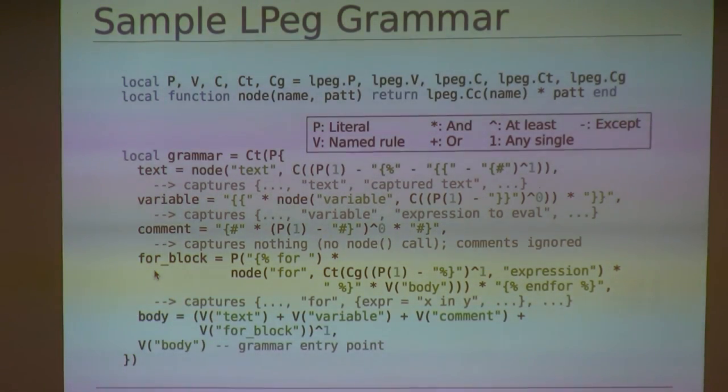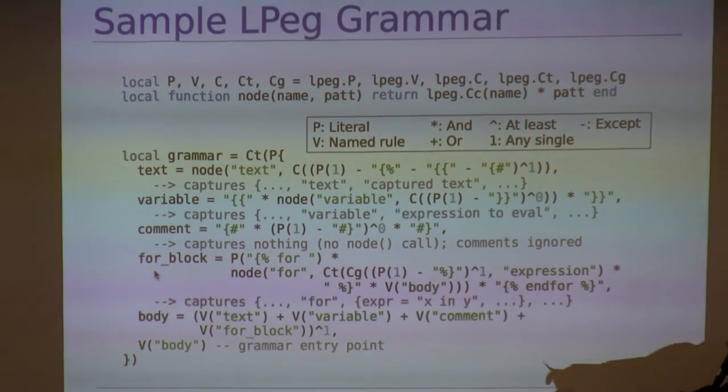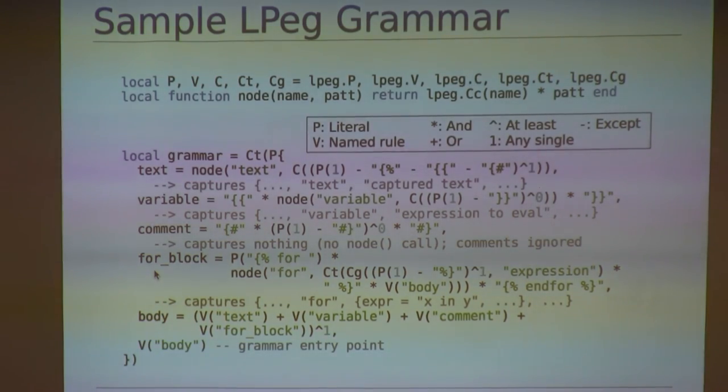Now, the for-control structure, that's complicated. Essentially, we're just going to match the beginning for delimiter. We're going to capture the for expression, then we're going to match something called body, followed by the end for delimiter. Now, what is body? Well, you can see the next rule that body is composed of one or more text, variable, comment, or for-block rules. So now you'll note that we can nest for blocks within one another. And the last line there just tells LPEG to start in the body rule. So, after breaking down this grammar, we can see it's not that complicated, and it will match any combination of the rules that are in that grammar. And that's really, really powerful.